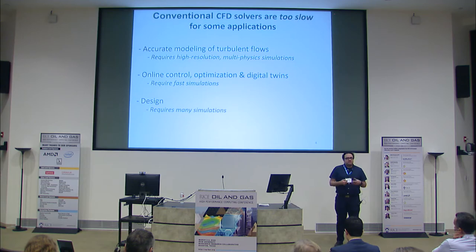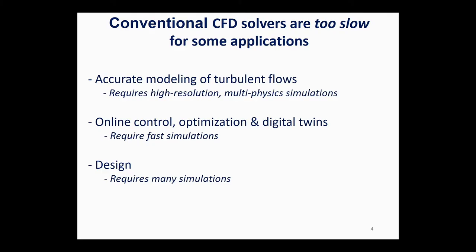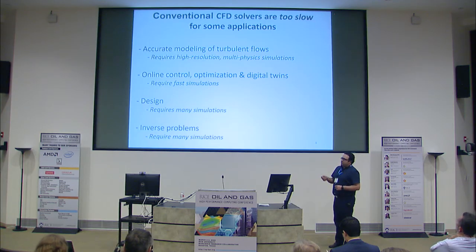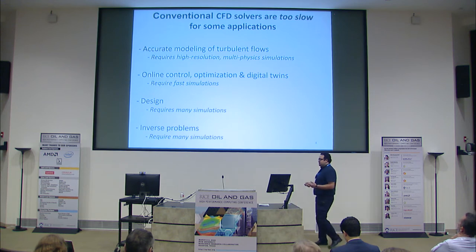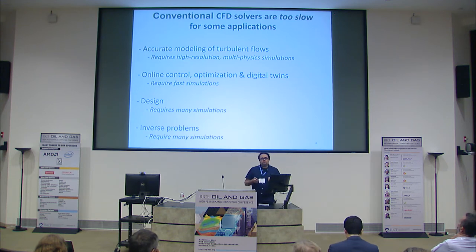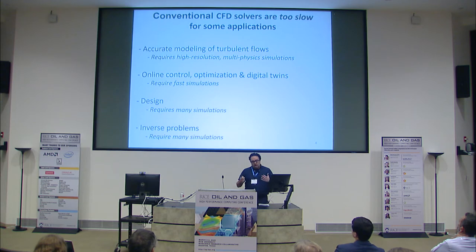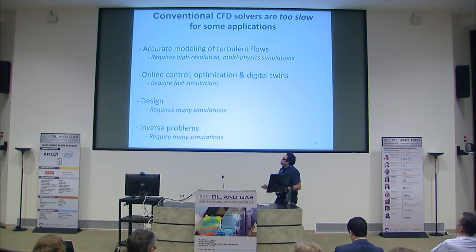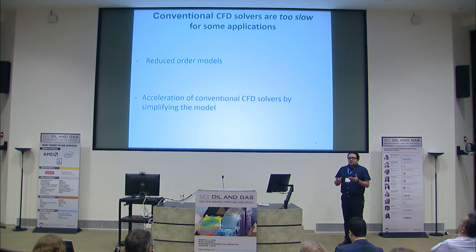For problems involving design, we need to do a lot of simulations, and at some point that becomes too expensive. These solvers are too slow. Also for inverse problems, with a lot of methods you need to do a lot of simulations. So if you are dealing with these kinds of problems and a turbulent flow, there is a very good chance you can't afford using conventional CFD to really do a high-fidelity simulation. Approaches have been developed to deal with this — reduced-order modeling is one approach where a lot of efforts over the past 20 to 30 years have developed high-accuracy reduced-order models.